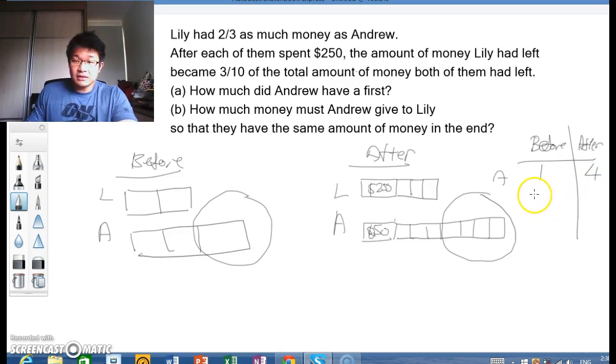So initially, Andrew had 3 units. So now, in the after model, Andrew would have 12 units. So this 12 units would include here 7 units and this $250. So this is now 12 units.